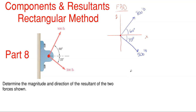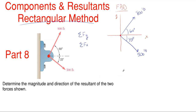Next, we are going to start utilizing the rectangular method. In utilizing the rectangular method, what we have to do is sum forces in the y direction and then sum forces in the x direction. We just have to tally them up and see what we have, and then that will work us towards the resultant. We are going to look at each force and pull out their x and y directional forces.